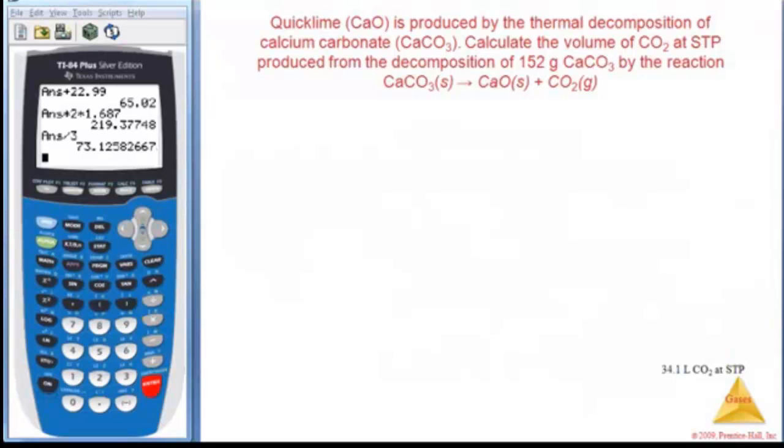Alright, quicklime is produced by the thermal decomposition of calcium carbonate. Calculate the volume of carbon dioxide at STP produced from the decomposition of 152 grams of calcium carbonate by the reaction. Okay, so this is pretty straightforward. Looks like I have a balanced reaction. So I'm starting with 152 grams of calcium carbonate.